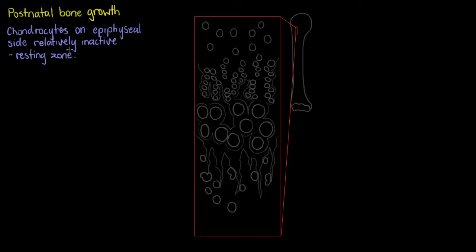The first thing we're going to notice is there'll be chondrocytes, or those cartilage producing cells, on the epiphyseal side, and they are going to be fairly inactive, they're not going to be replicating very often, and that area is going to be called the resting zone. We can see those chondrocytes all through that resting zone here.